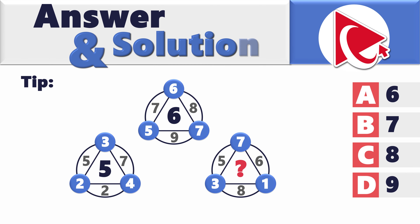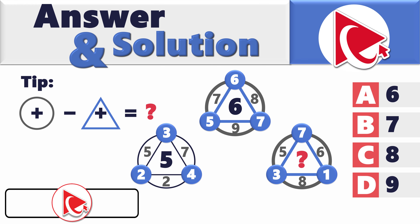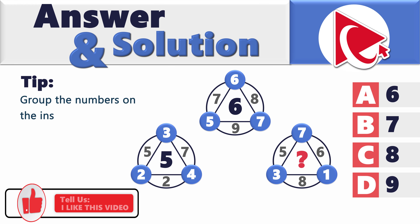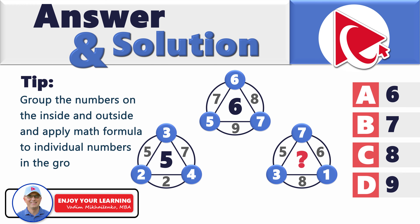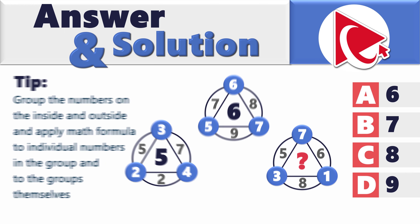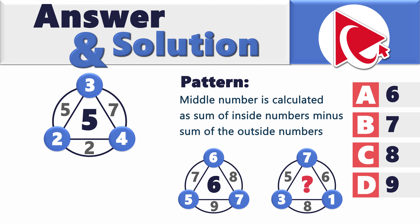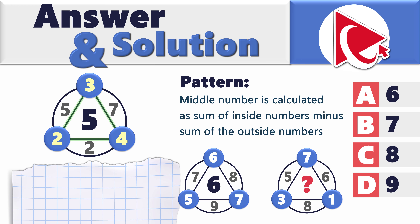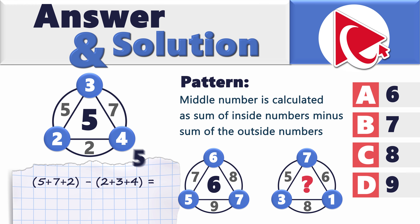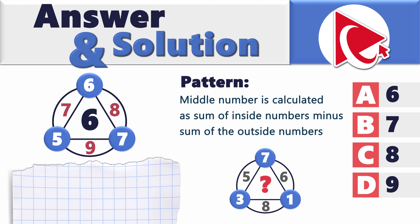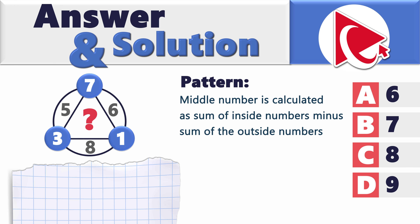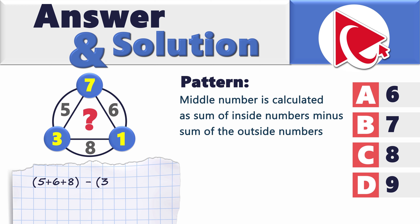Here's the tip on how to solve these types of problems. Because we have inside numbers and outside numbers, you need to group them and do the calculations. You apply a math formula to individual numbers in each group and to the groups themselves. The first middle number 5 is calculated as the sum of inside numbers (5 + 7 + 2) minus the sum of outside numbers (2 + 3 + 4), which equals 5. Similarly, 7 + 8 + 9 minus (5 + 6 + 7) equals 6. For the missing digit: 5 + 6 + 8 minus (3 + 7 + 1) equals 8. So the correct answer is choice C: 8.